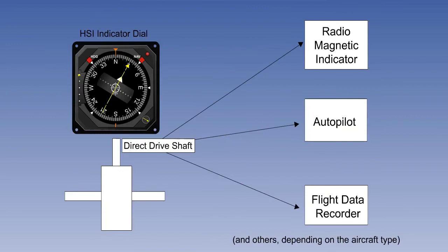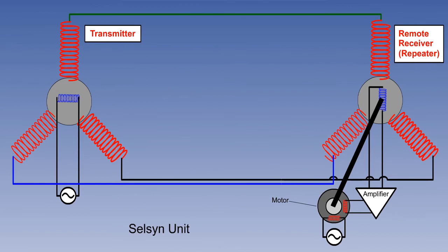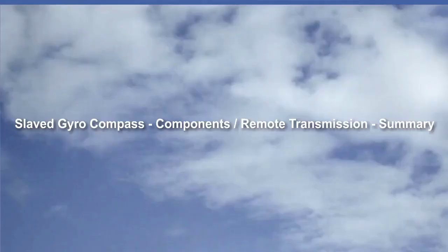The gyromagnetic compass can be used to transmit heading information to other instruments. This is done by a CELSYN unit in which the transmitter is a stator rotor combination with the rotor on the compass indicator driveshaft. The receiver or receivers are another stator and rotor combination in conjunction with an amplifier and an electric motor. This completes all the lessons on the gyromagnetic compass.